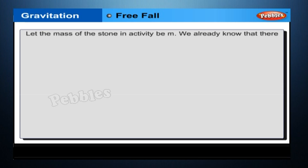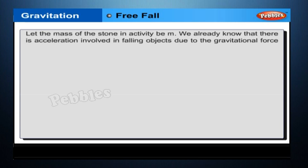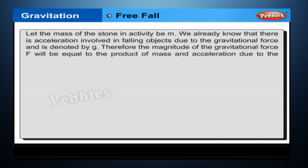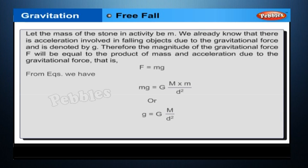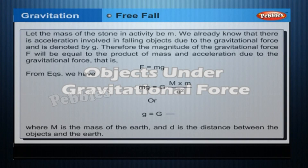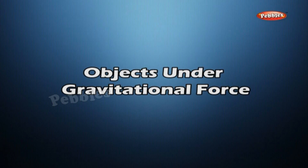Let the mass of the stone be m. We already know that there is acceleration involved in falling objects due to the gravitational force, denoted by g. Therefore the magnitude of the gravitational force F will be equal to the product of mass and acceleration due to gravitational force, where M is the mass of the earth and d is the distance between the objects and the earth.